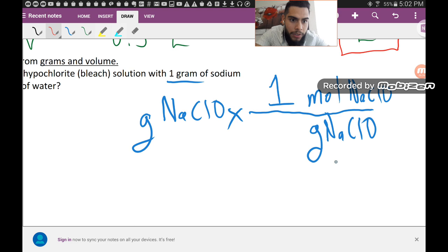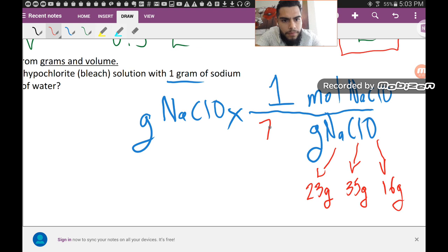Sodium has a mass of roughly 23 grams per mole. Chlorine has a mass of roughly 35 grams per mole. And then oxygen has a mass of roughly 16 grams. And whenever we add all that, we get 74 grams. Whenever we get, and we're starting with one gram of sodium hypochlorite.